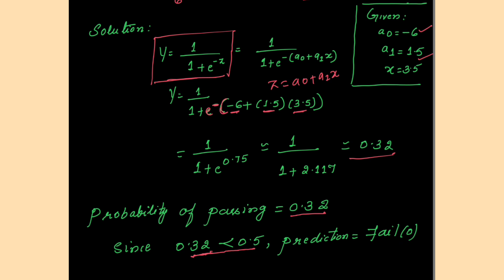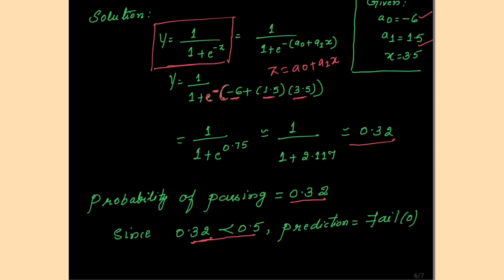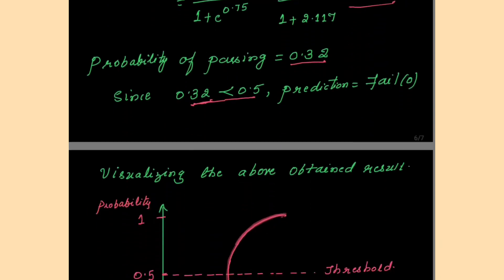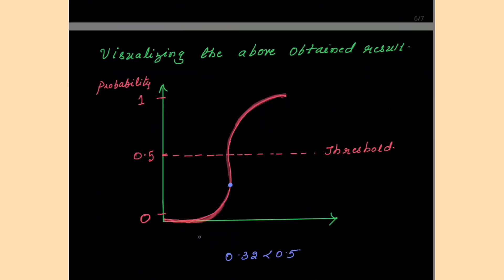As stated earlier, the core of logistic regression is the sigmoid function. Let us visualize this output on a graph. This is the usual diagram for the sigmoid function — all probability values lie between 0 and 1, and the sigmoid curve always looks like an S-shaped curve. The threshold value is 0.5.